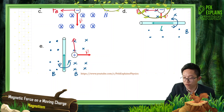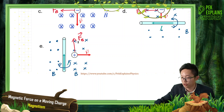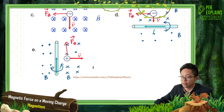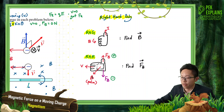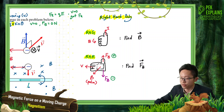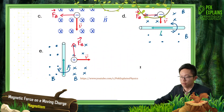Now applying the right-hand rule: velocity to the right, magnetic field into the page, palm facing into the page — my thumb points upward. It's a positive charge, so the force follows the thumb. The force is going upward. Remember: use the right-hand grip rule to find the magnetic field, and the right-hand rule with the palm to find the magnetic force.